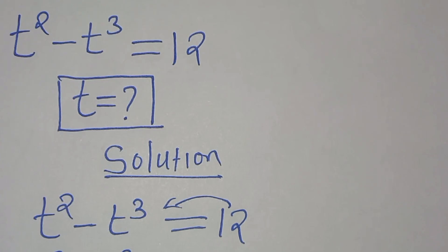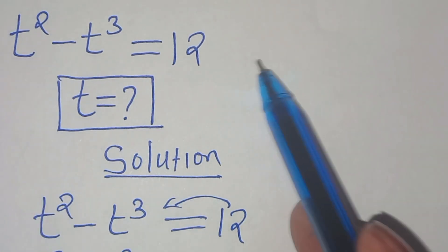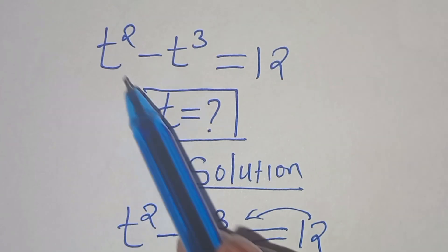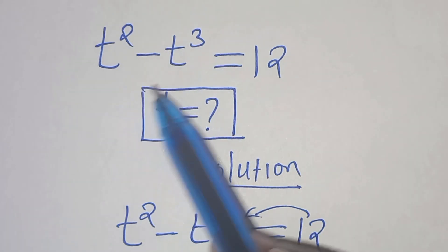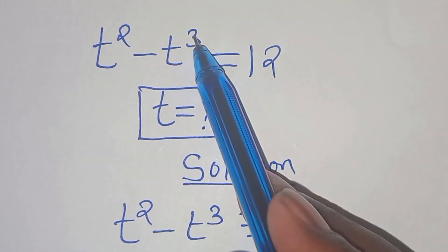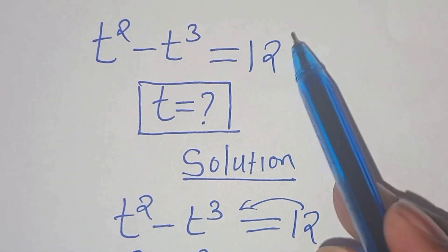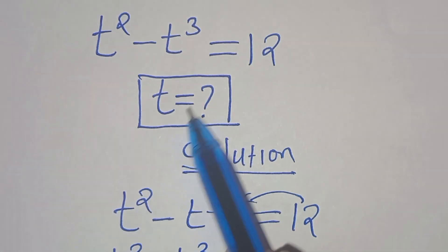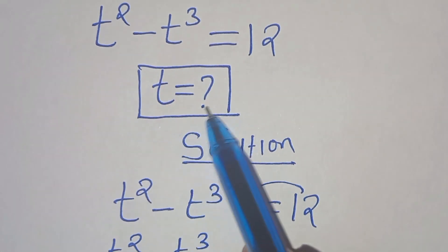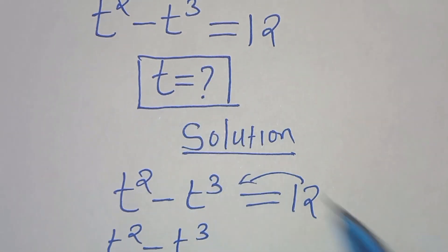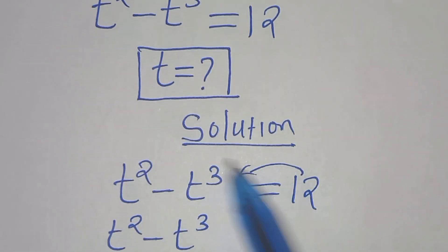Hello everyone, welcome to solve this nice algebra problem which is t to the power of 2 minus t to the power of 3 equals 12. What is the value of t?